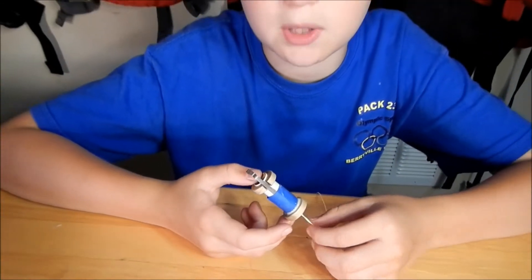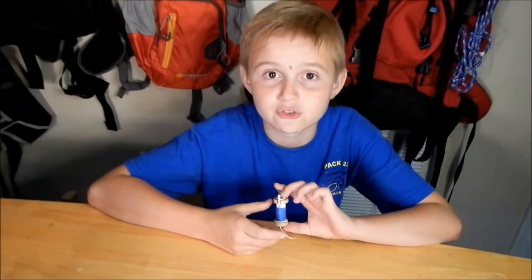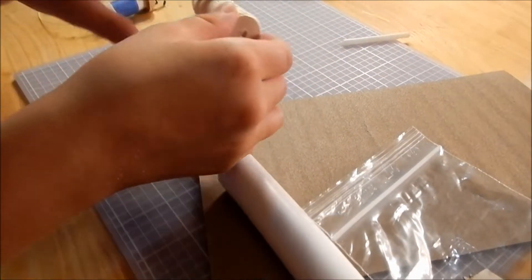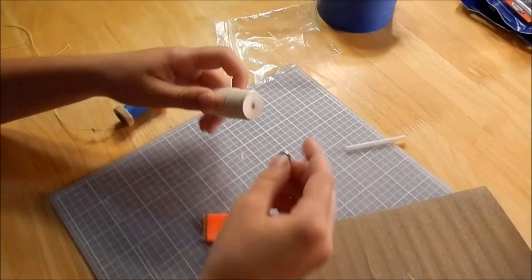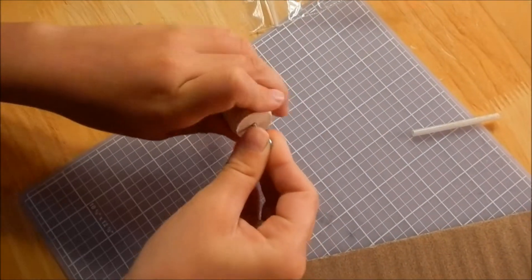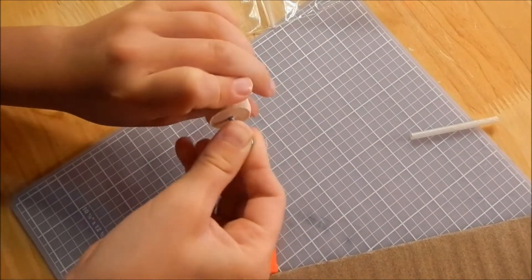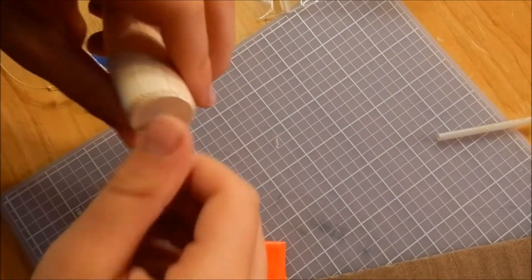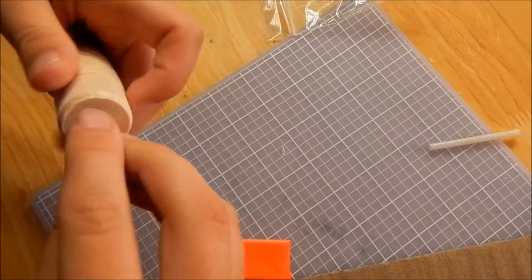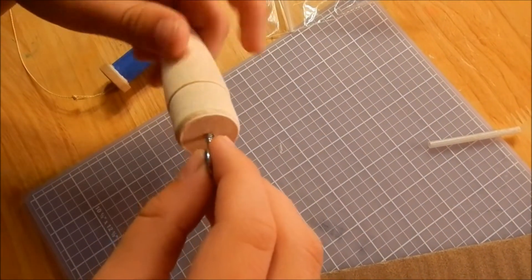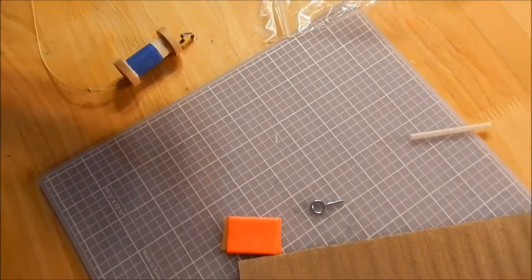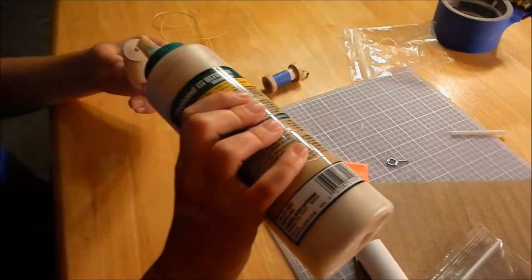Second step, you want to grab the nose of the rocket and then an eye screw, and you just want to try to screw it in just a little bit. Then you want to unscrew it, you want to put a little bit of glue in it.